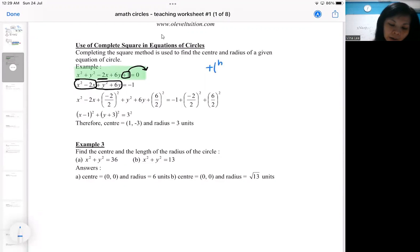So every time we complete square, you're adding this. So I'm going to do that for the x family. So this is the b for the x family. So I'm going to add this to the family of x. At the same time, I'm also adding on this side. So whatever you're adding on the left side, you add on the right to balance off.